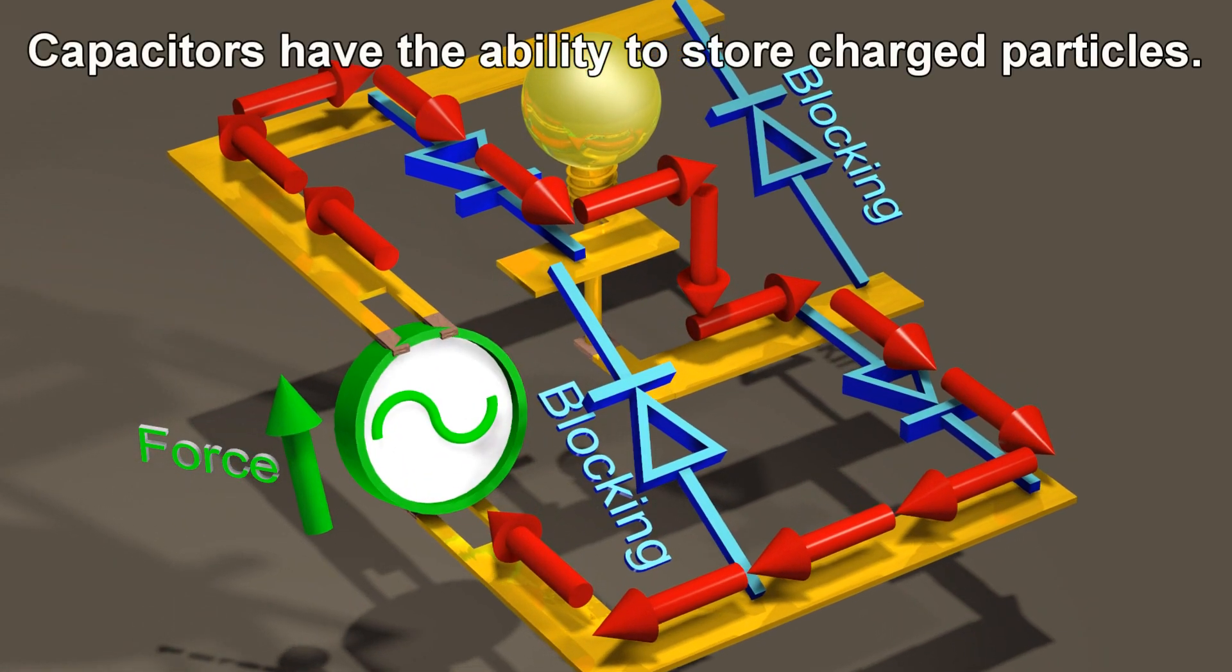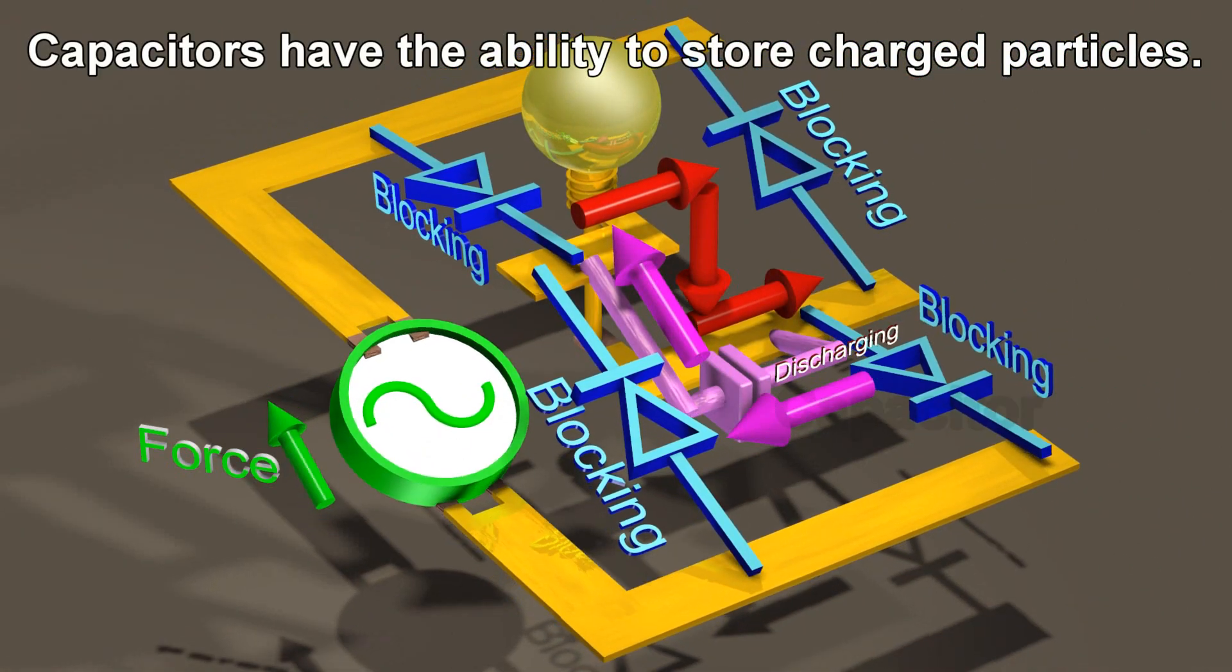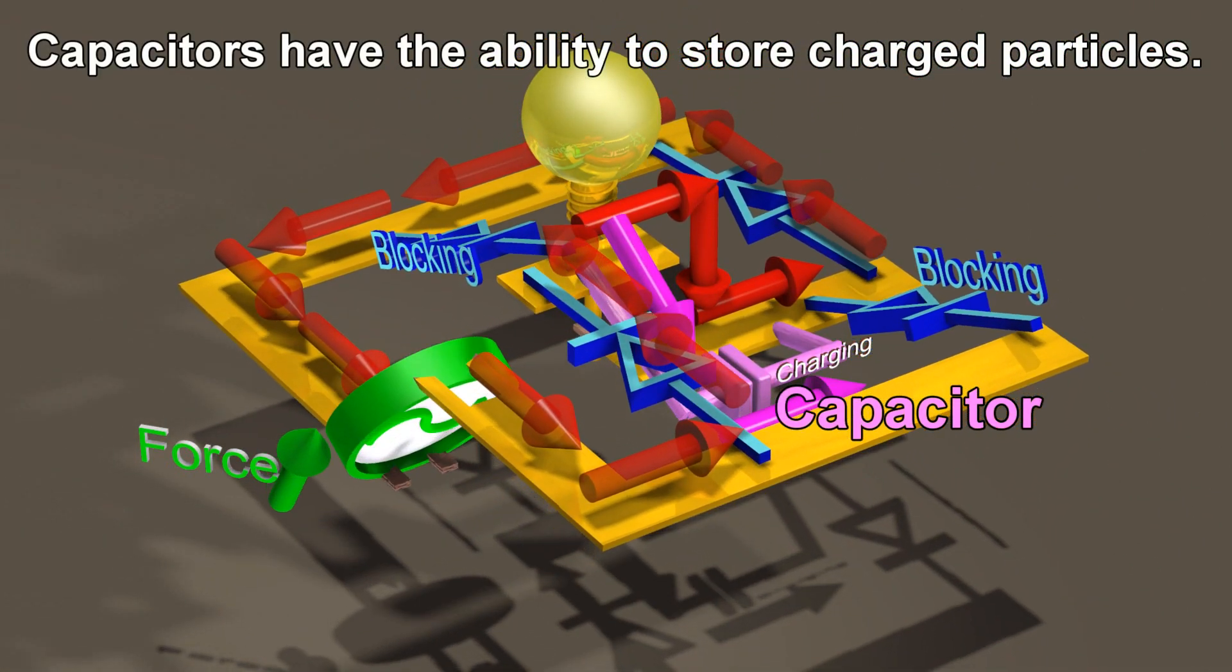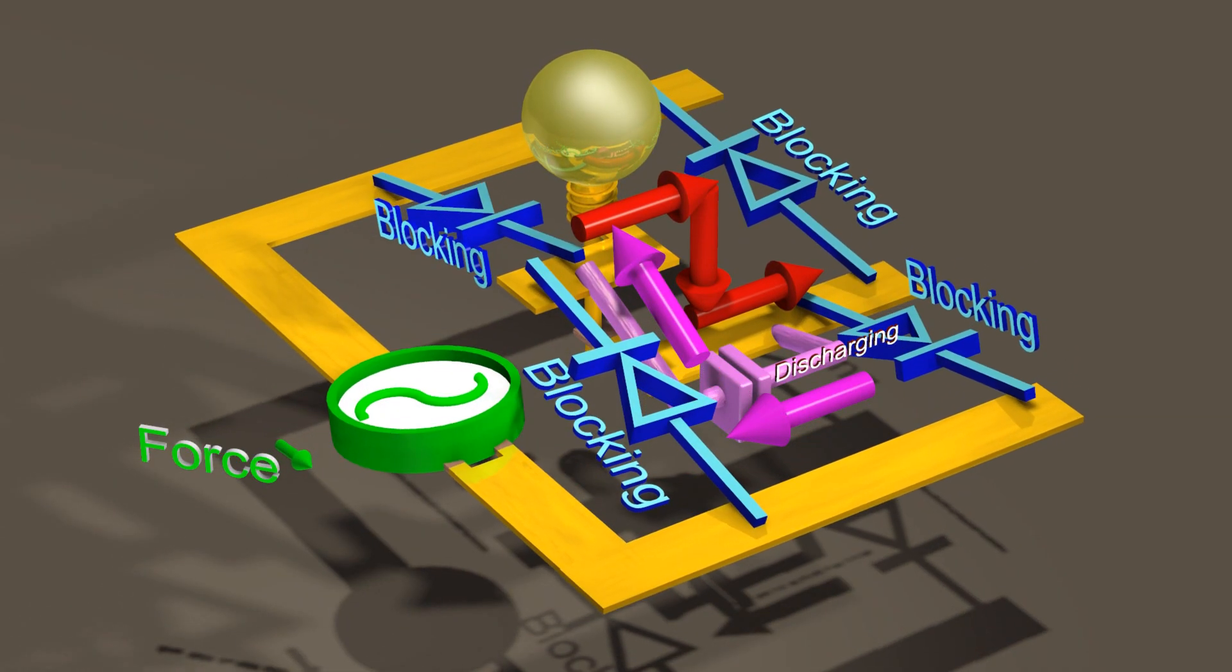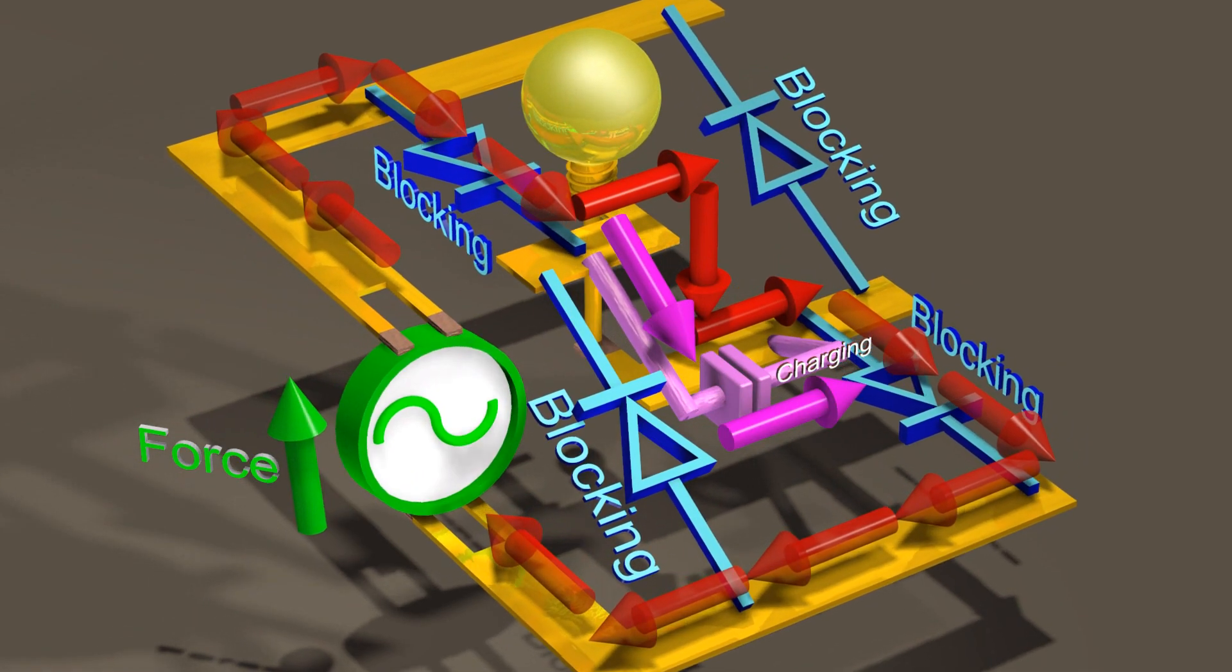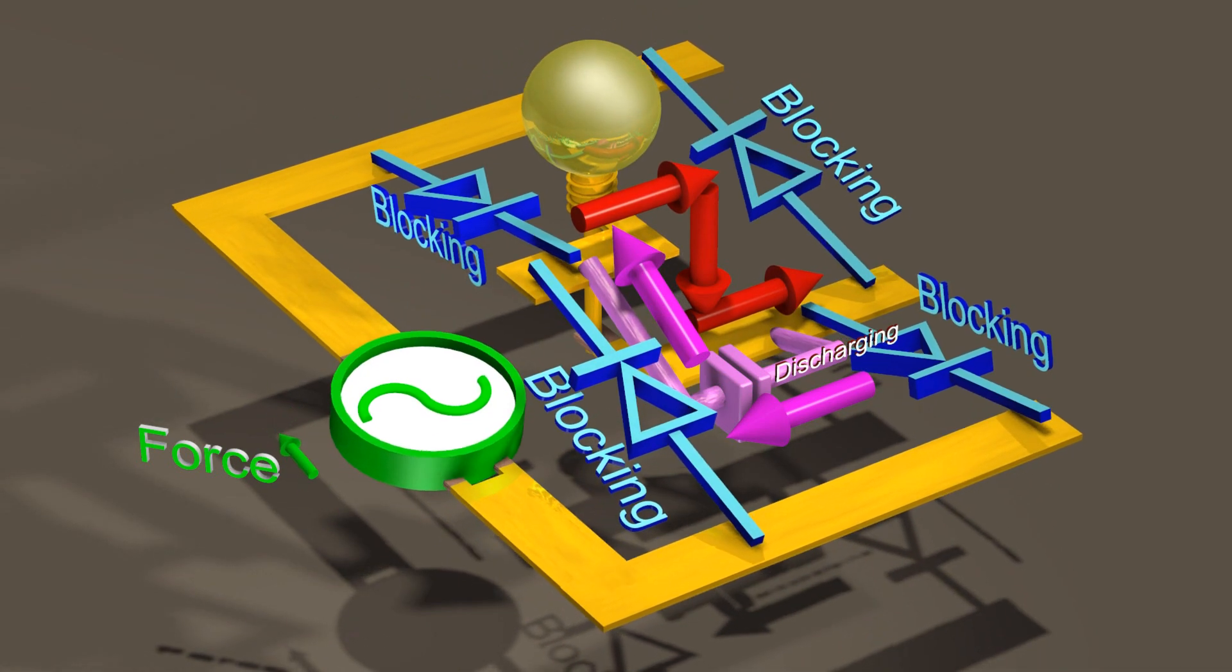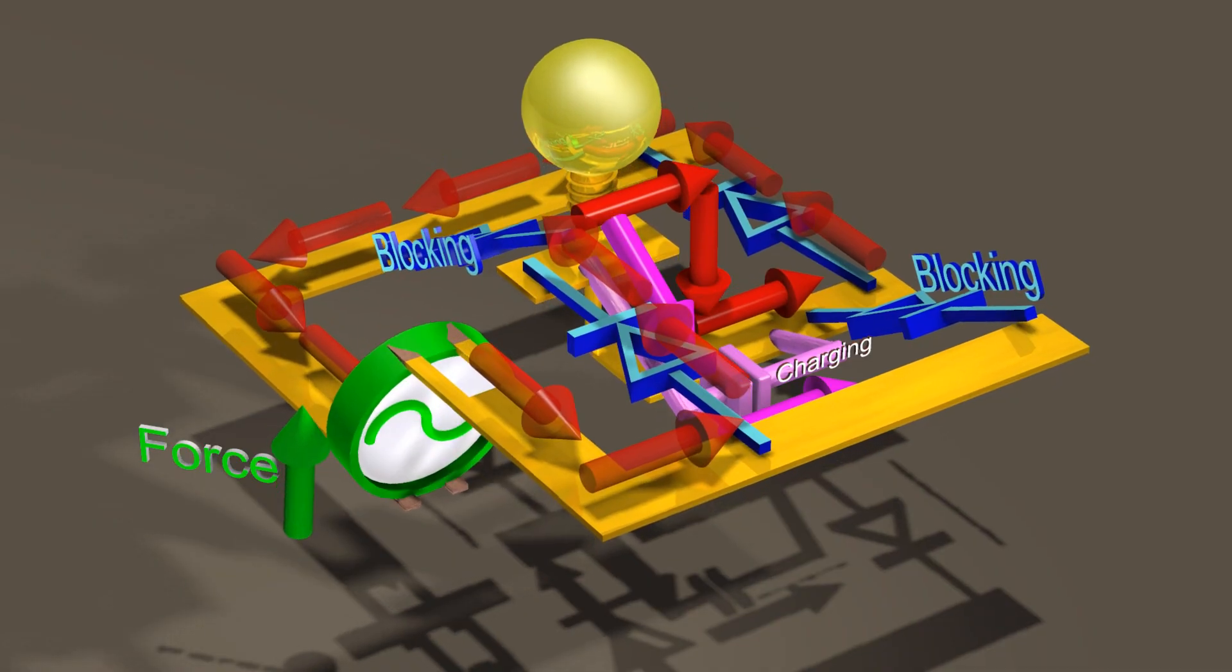Capacitors have the ability to store charged particles. When the capacitor is placed in this circuit, the capacitor stores and releases the charged particles, so as to try to keep the voltage across the device constant.